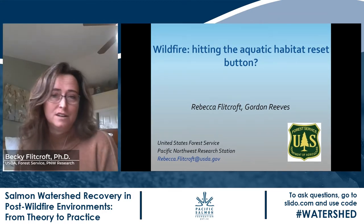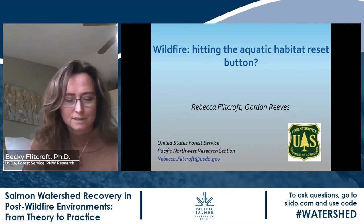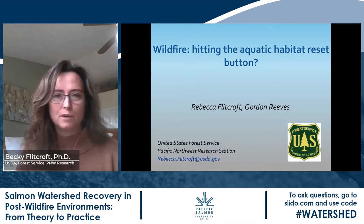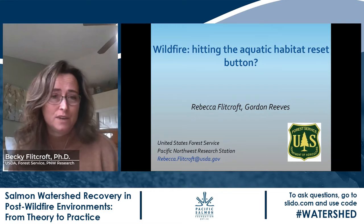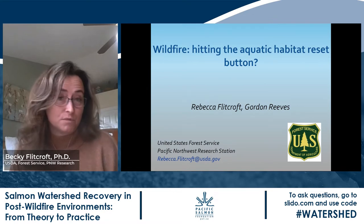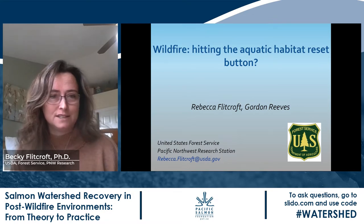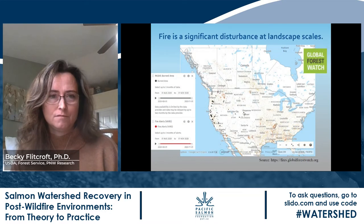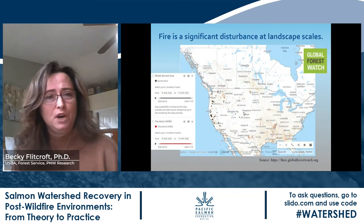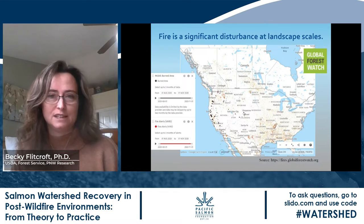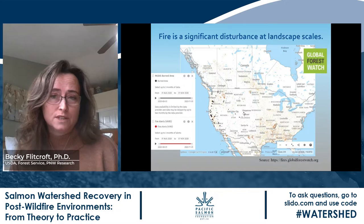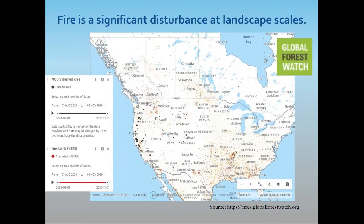We're going to start this talk by reviewing a bit more about wildfire processes. One question we have is: what does wildfire do to aquatic systems — does it reset aquatic habitat, or is it a catastrophe? We know that wildfire is a significant disturbance at landscape scales. Historically in the western United States, wildfire was probably the single most important natural disturbance process that shaped the complexity, distribution, and diversity of aquatic and terrestrial habitats.